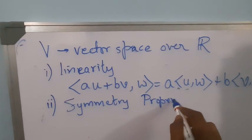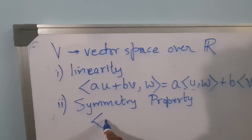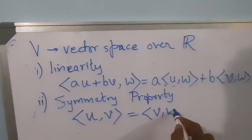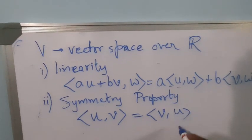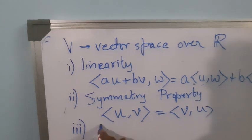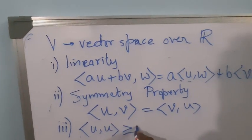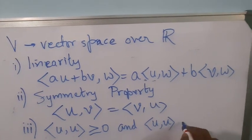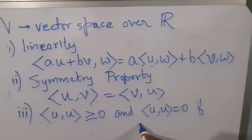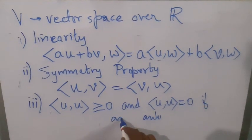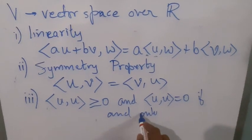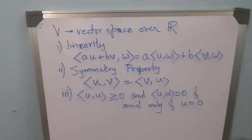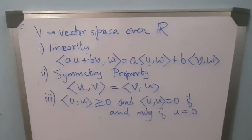In the field of reals, since the conjugate of a real number is itself, the conjugate symmetry property changes to simply the symmetry property — that is, we can interchange the positions of the first and second elements. The third property remains the same: the inner product is always greater than or equal to zero, and the inner product is zero if and only if the element is zero. This is the definition of inner product for a real vector space.